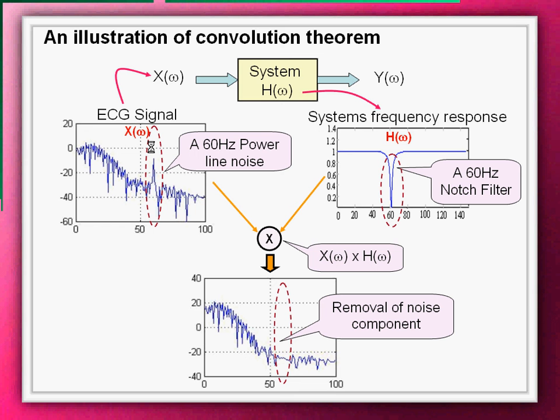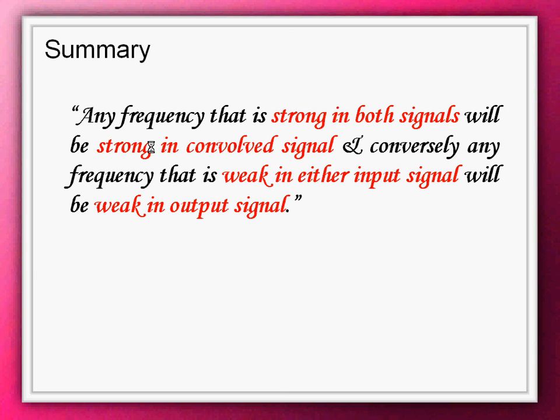Thus, what we understand by multiplication of the frequency spectra is that any frequency that is strong in both signals will be very strong in convolved signal, and conversely, any frequency that is weak in either input signal will be weak in the output signal.